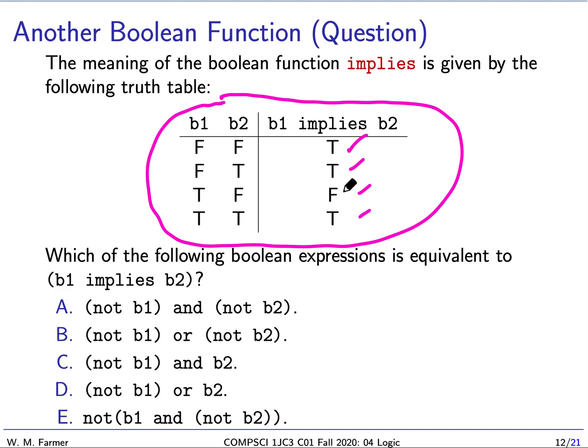The question is: which of the following Boolean expressions is equivalent to B1 implies B2? We can test each option using a truth table and see if we get the same truth table as for implies. So we are going to test the truth table for NOT B1 AND NOT B2.